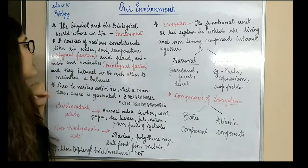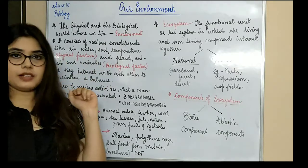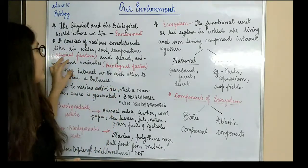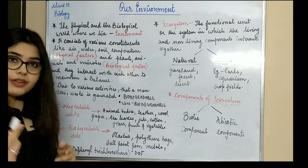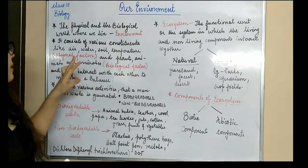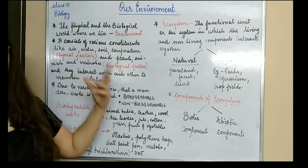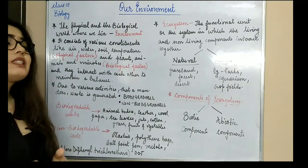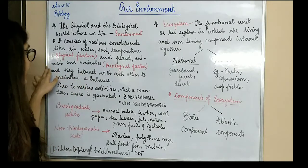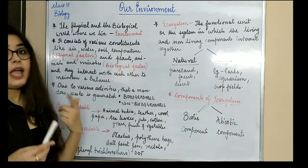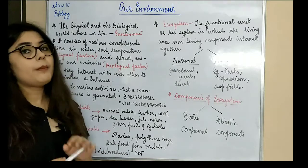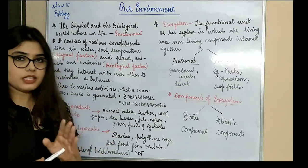There are two examples given to explain physical and biological factors. From the name itself you can figure out: physical factors are the factors which are physically there — for example, air, water, soil, temperature, humidity, moisture. All these are physical factors. Biological factors are animals, plants, and microorganisms — these are all biological factors.